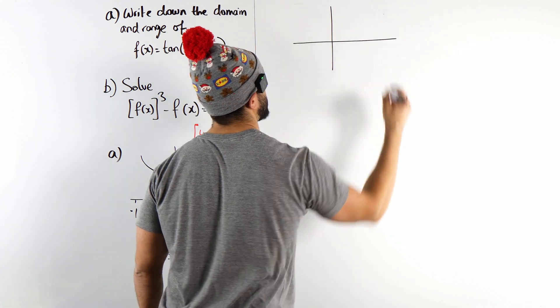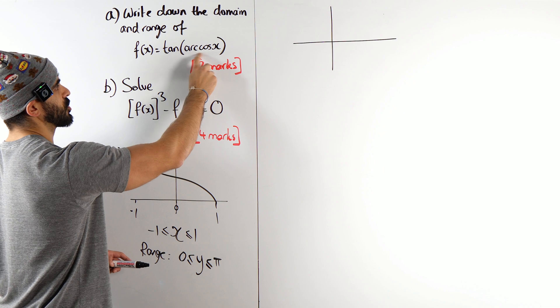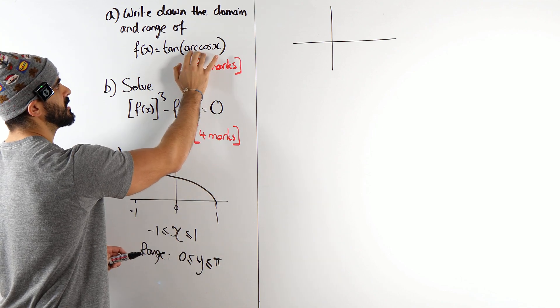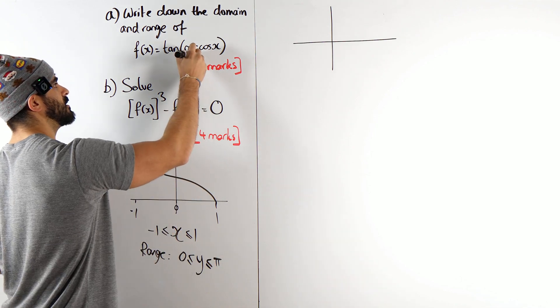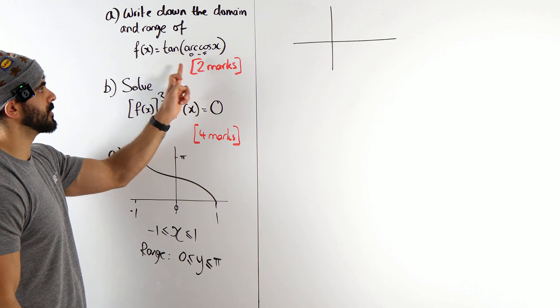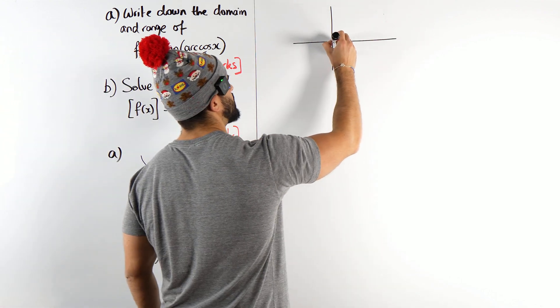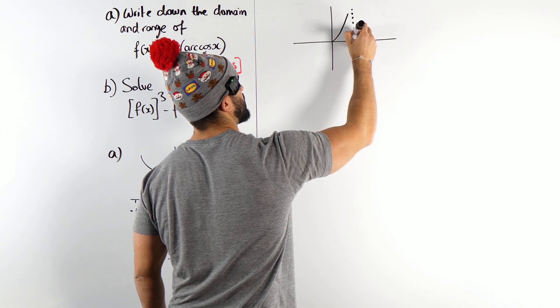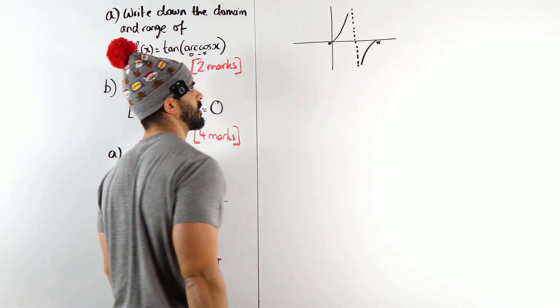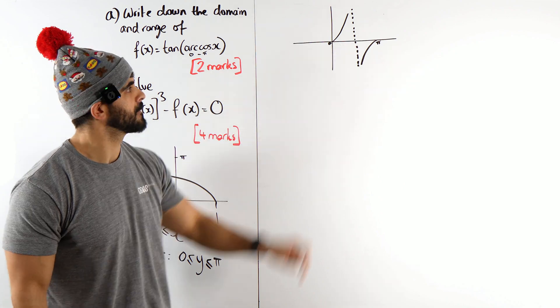But the tan graph, if you think about it, we're taking our x values, we're subbing into our cos. These values are between zero and pi. So these values here are between zero and pi. So you're doing tan of numbers between zero and pi. So let's draw the tan graph between zero and pi. It looks something like this. What do you notice? You notice that it's undefined for pi over 2.